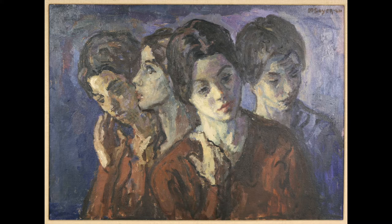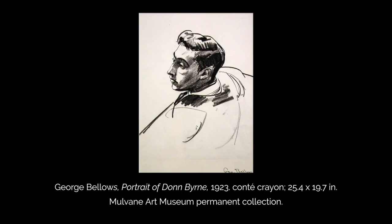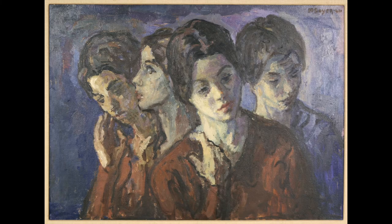He studied in New York and in Europe and was particularly influenced by the Ashcan School painters Robert Henri and George Bellows. Sawyer established himself as an American artist best known for his portraits of everyday people, frequently depicting women. He is described as a social realist painter.